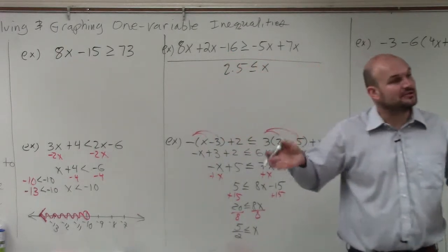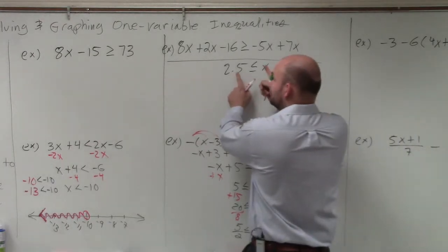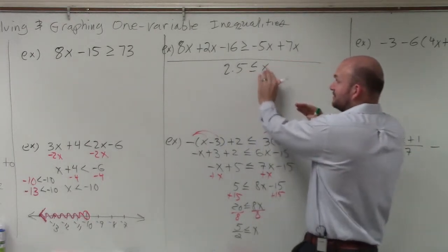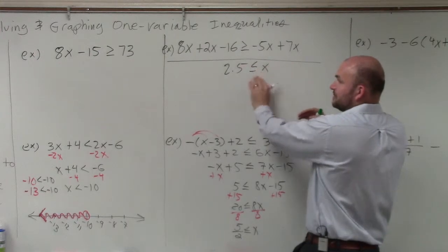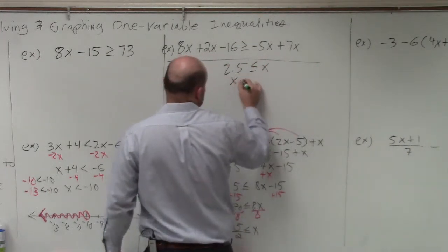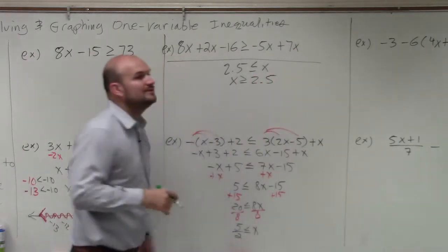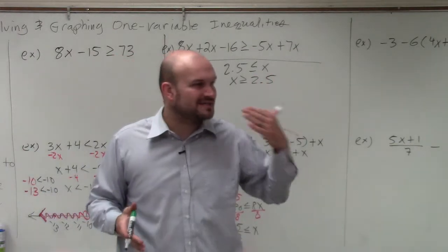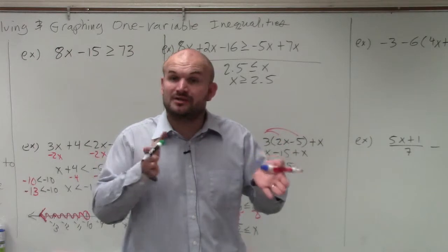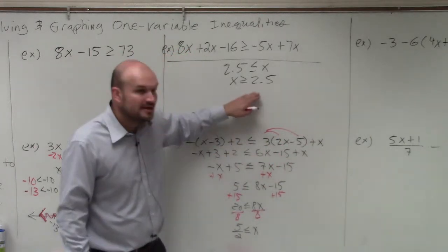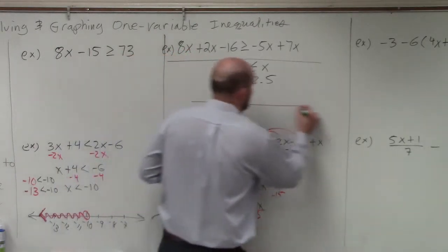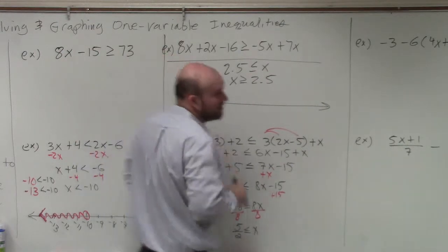You could say 2.5 is less than or equal to x. Now, I always like to graph when the variable is on the left-hand side, so I'm basically going to switch, flip everything. x is over here, 2.5 is over here, and the inequality changes. So it's x is greater than or equal to 2.5. You don't need to rewrite it as a decimal, but you need to understand the decimal value, or at least where the fraction would be, because when you guys are graphing this, I don't really want to use a number line with decimals.